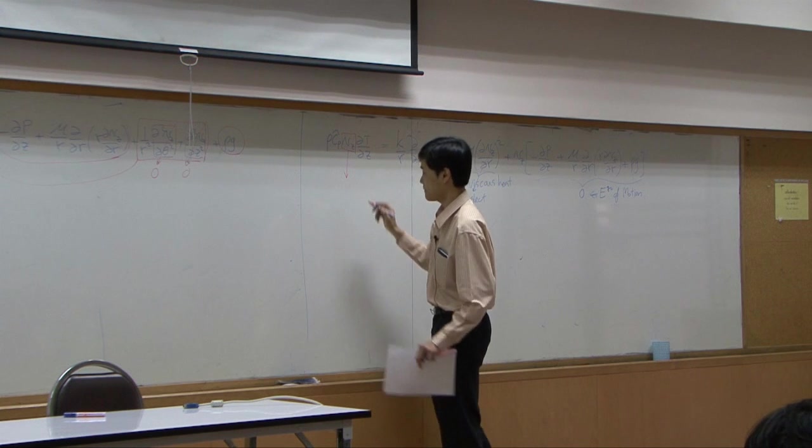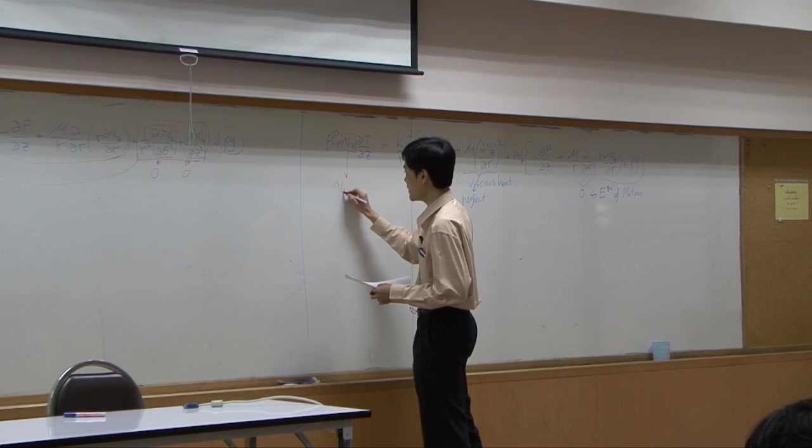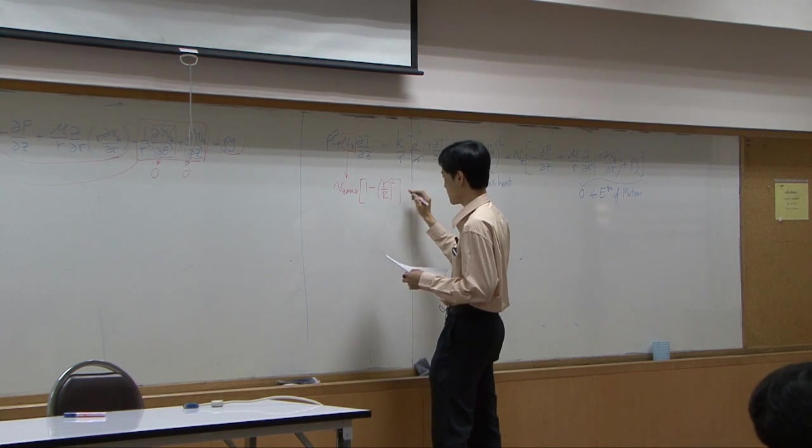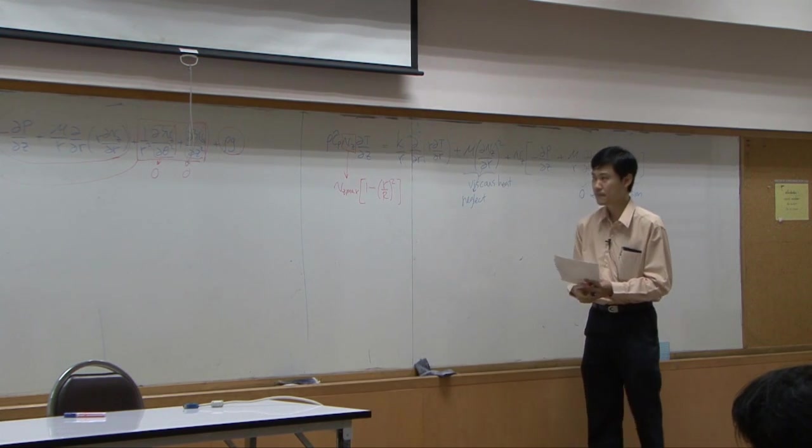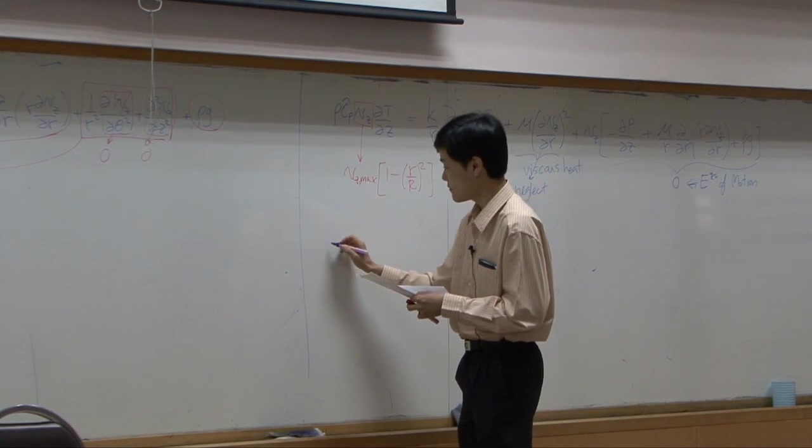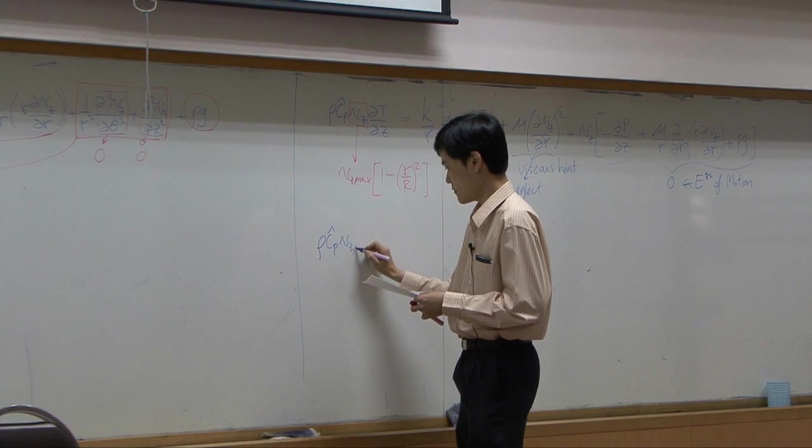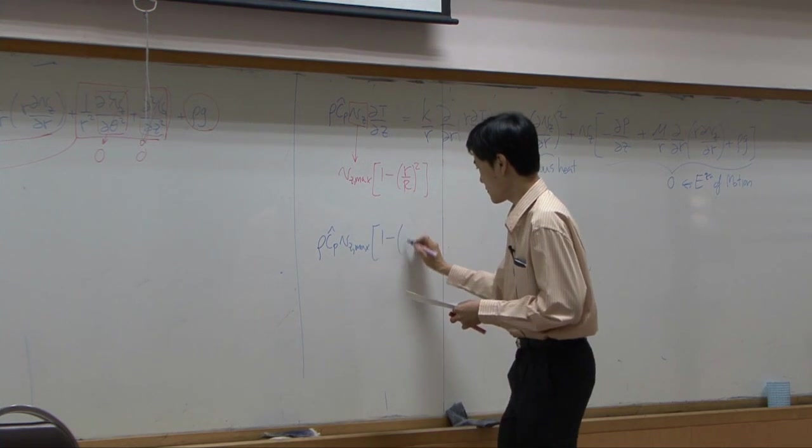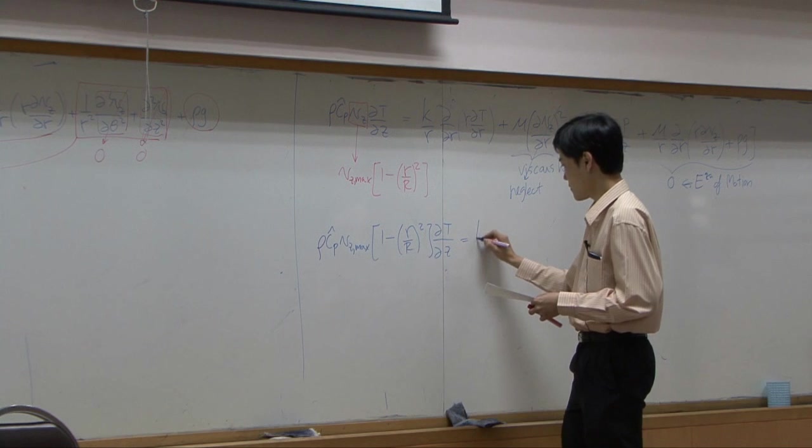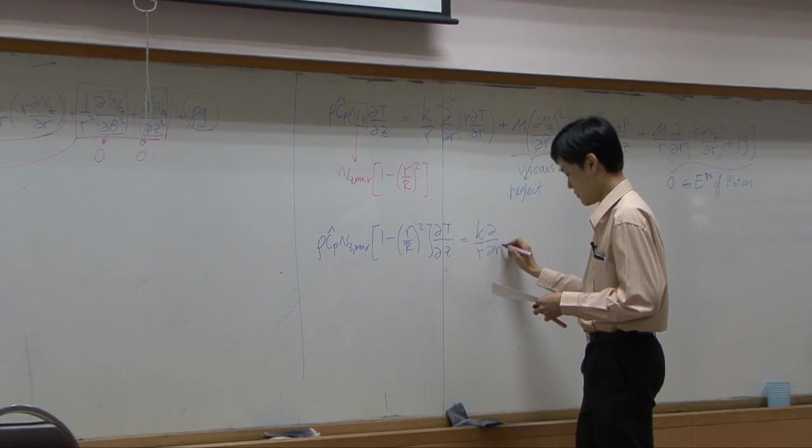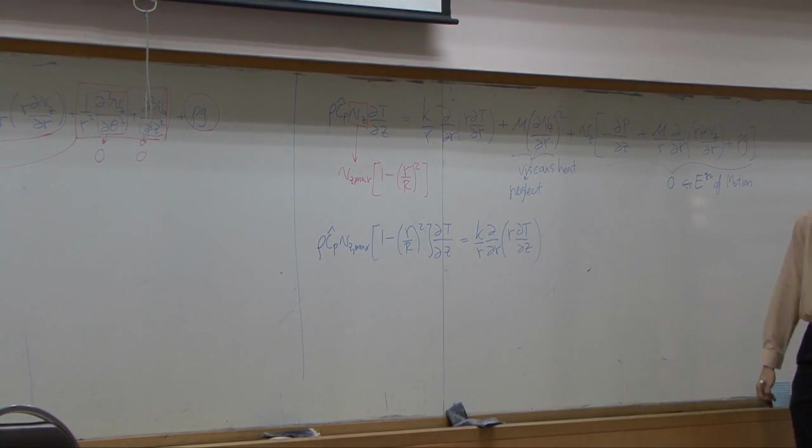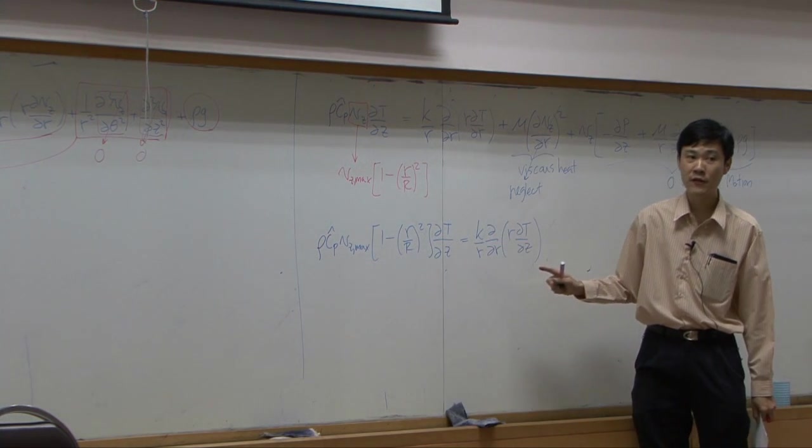Now we have only two terms. From starting from six terms, you can reduce into two terms. This Vz now is Vz max times one minus r over R squared. Let's combine them together.